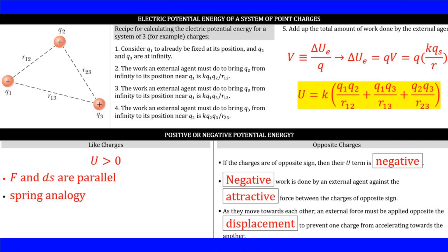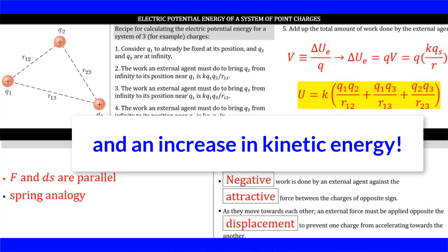Next section: electric potential energy of a system of point charges. We're going to look at the potential energy of a system of charges. Since all three of these point source charges are positive, they are each mutually repelling the others — this system contains a lot of electrostatic potential energy. If I kept charge Q1 fixed in place and moved charges 2 and 3 infinitely far away, that would represent zero potential energy. Think of a spring analogy: if I compress a spring, that represents a lot of elastic potential energy, and if I let that spring relax, that represents a decrease in the elastic potential energy.